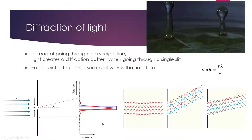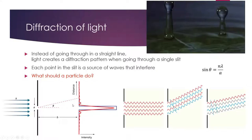We'll look at double slit diffraction on the next slide. Remember that only waves can diffract. You can imagine what would happen if you shot a particle through a slit: if the slit was smaller than the particle it wouldn't fit through; if it was bigger the particle would just go right through. But one particle can't create a diffraction pattern with itself — it's just one particle. Particles would just go straight through the slit.